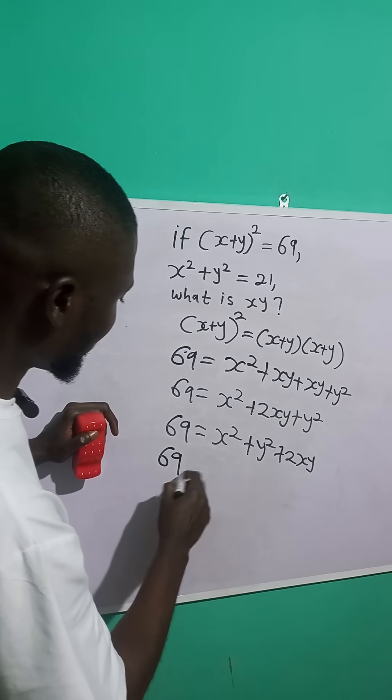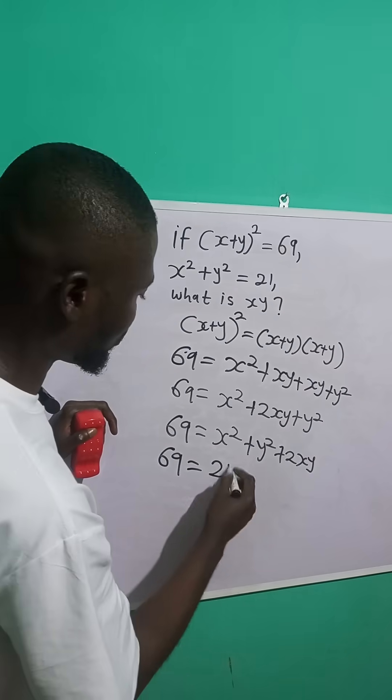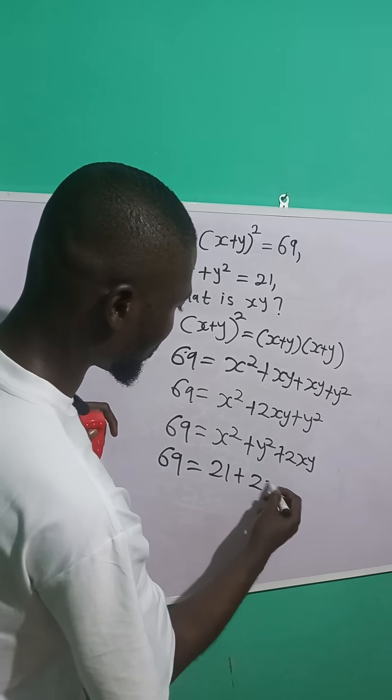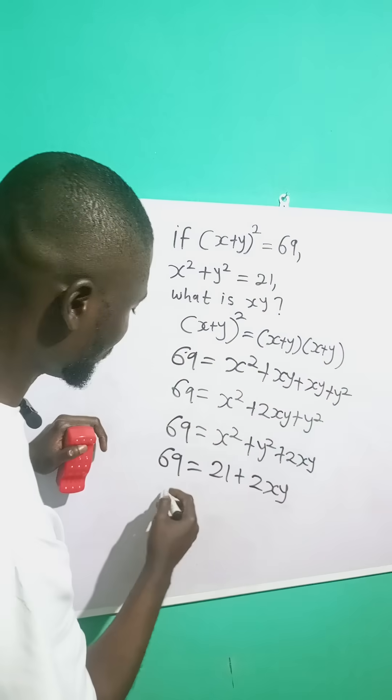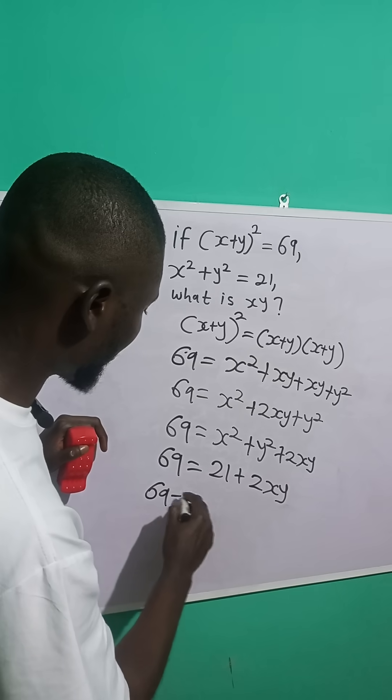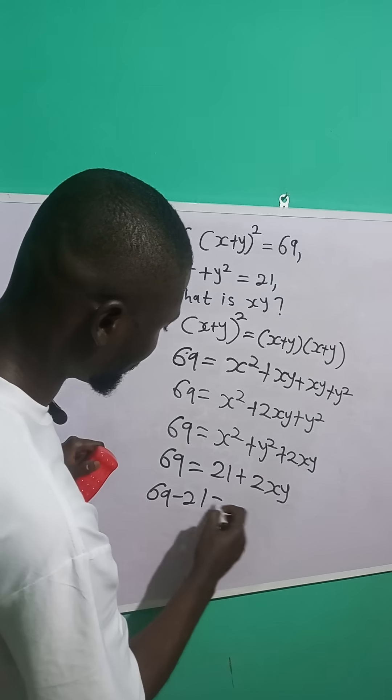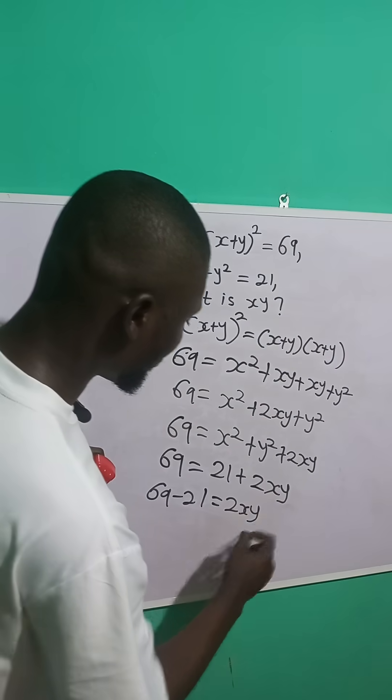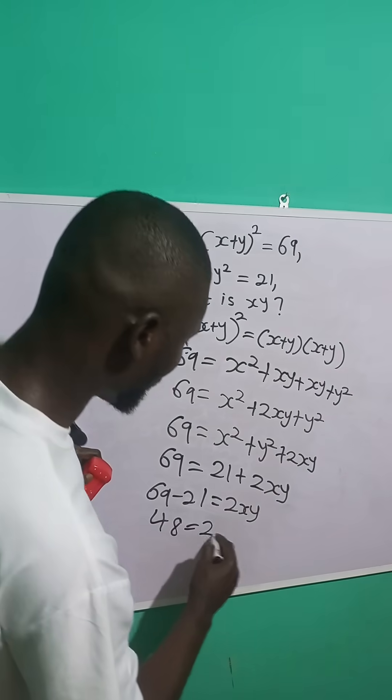So we have 69 is equal to x squared plus y squared, which is 21, plus 2xy. I'm going to transpose this, so this will be 69 minus 21 is equal to 2xy. 69 minus 21 will give me 48 is equal to 2xy.